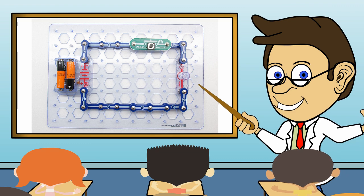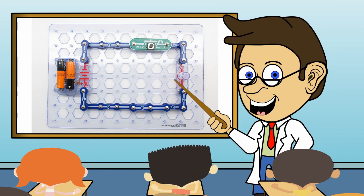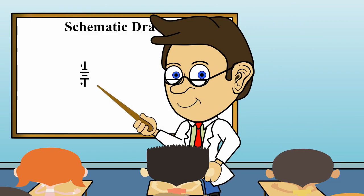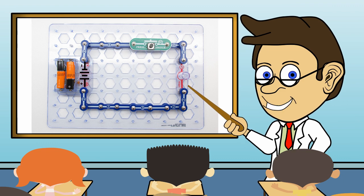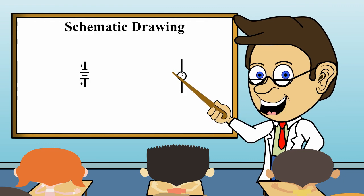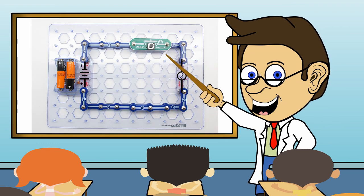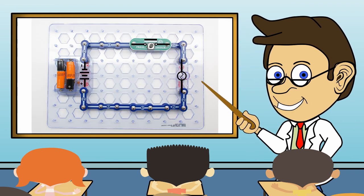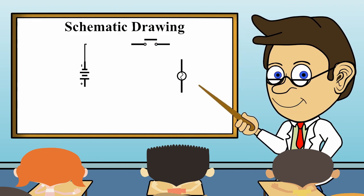Let us take a look at a schematic drawing that represents the circuit we built. The batteries would be represented by this symbol. The lamp would be represented by this symbol. The switch would be represented by this symbol. And all of the components would be connected by wire symbols, which are simple lines.